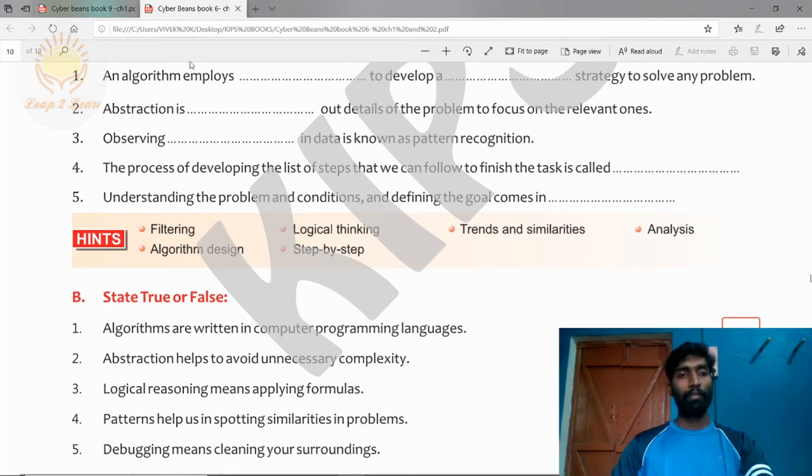And the fifth question: understanding the problem and conditions and defining the goal comes in dash. Students try to guess. Analysis is the correct answer. Now true or false.